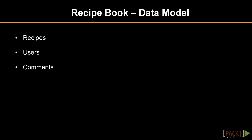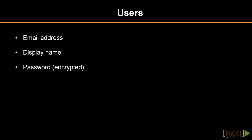The model of data we need to store in our application is very simple. We need to be able to store recipes, users, and comments. Let's start with the user. Almost every web application contains an entity named User. Our user should contain the following information: email address, password, and display name.